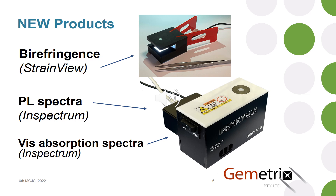To fill this need, Geometrics has recently developed two more instruments: one for looking at birefringence, also known as a cross-polarising filter arrangement, called the Strain View; and a slightly more sophisticated piece of kit called the Spectrum, which enables observation and recording of PL spectra.